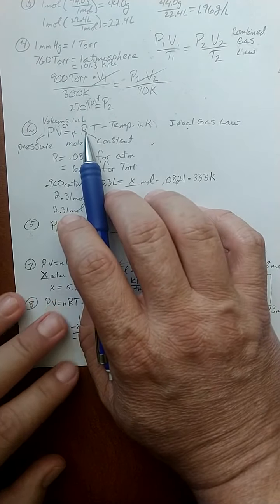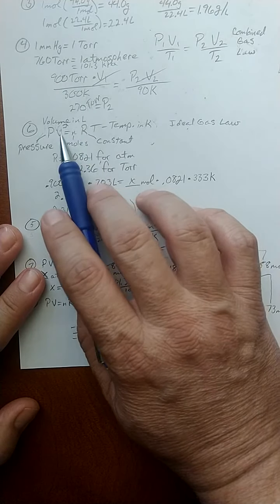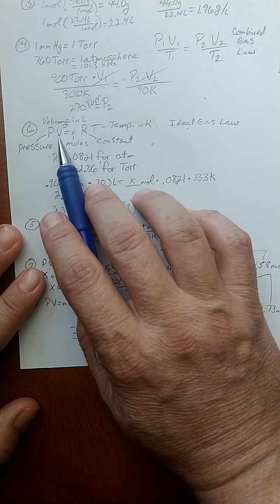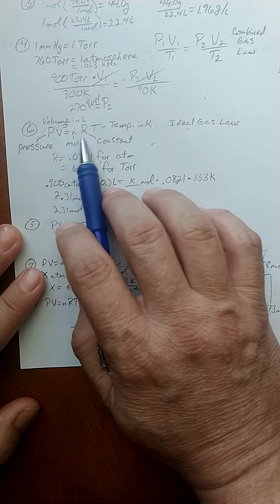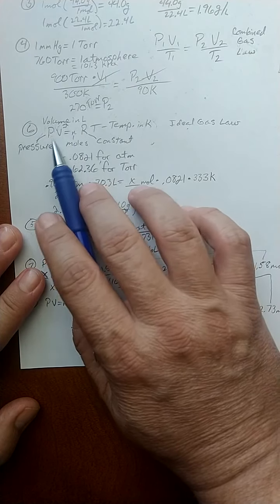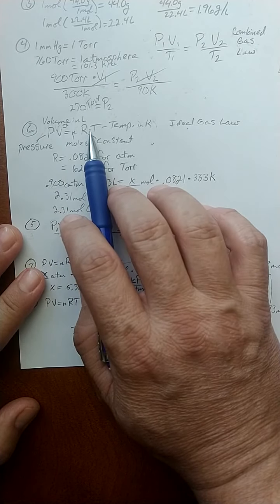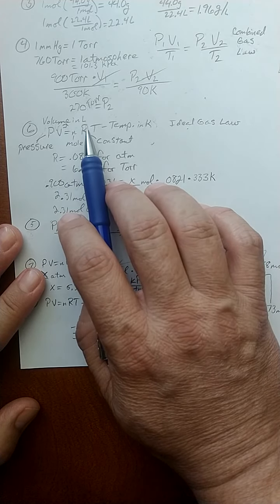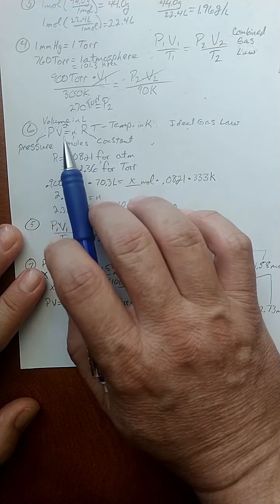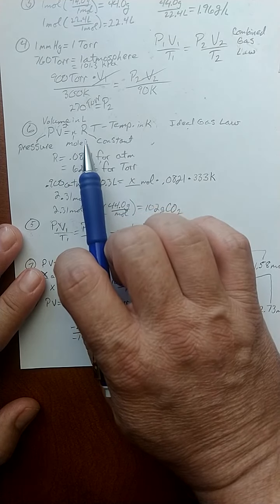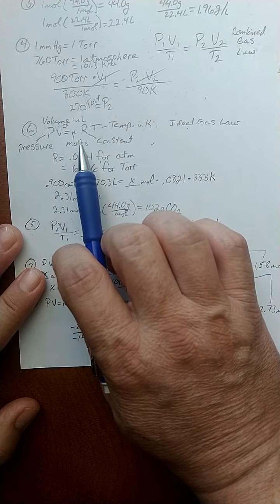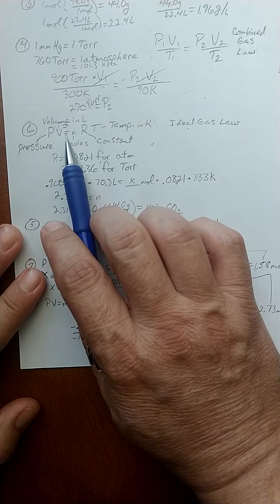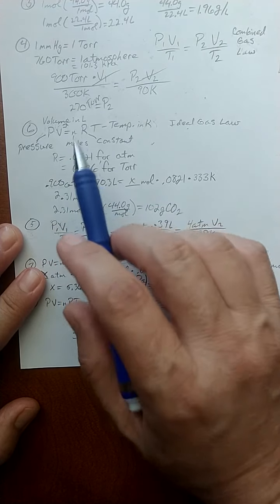So, why do we need a constant? Because pressure times volume is proportional to moles times temperature. If this one goes up double, that one goes up double. The left side will go up, the right side goes up, etc. But they're not equal until we do a mathematical cheat, so to speak. They're not actually the same number. They're not mathematically equal. Until we put in a constant.